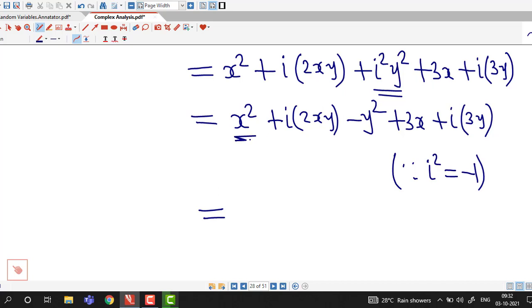Now we combine those terms which do not contain i. So we combine all those terms: x square minus y square plus 3x. And we collect coefficient of i. So we take i common from these two terms: i into 2xy plus i into 3y.